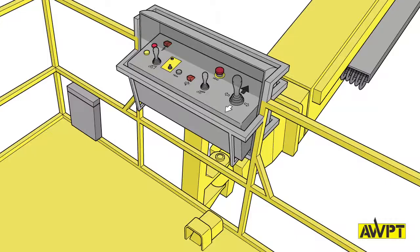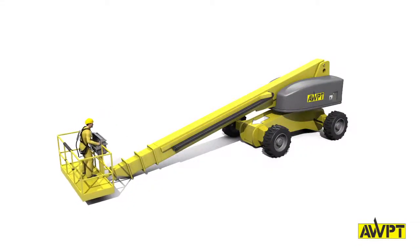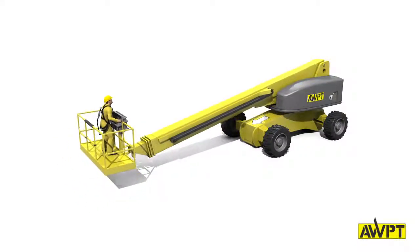Next, stop the engine and function test the auxiliary power or emergency lowering controls. Then restart the engine and check all the boom functions to ensure they are working properly as well. When testing these features, remember to always look in the direction of travel prior to movement.